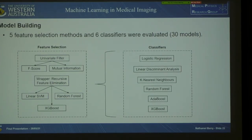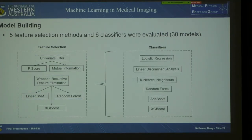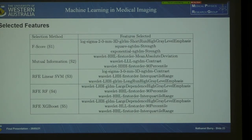For model building we looked at five feature selection methods: two univariate filter methods using F-score and mutual information, and then recursive feature elimination using a linear support vector machine, extreme gradient boosting tree, and a random forest. Recursive feature elimination recursively goes through all features and finds the best subset assigned the greatest weight in these classifiers. Every feature set from one of these methods was run through six classifiers, giving a total of 30 different models. The features selected by each method were generally from log and wavelet filters, and were first-order and textural features only — shape features didn't make it through the process.